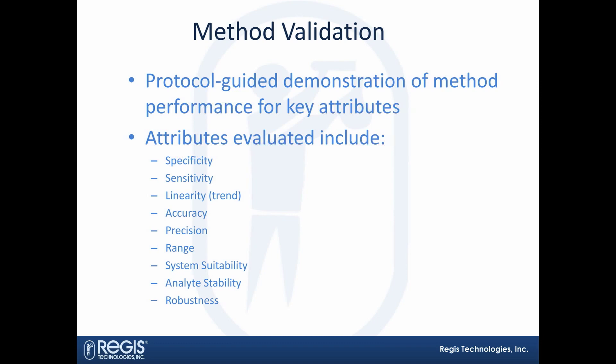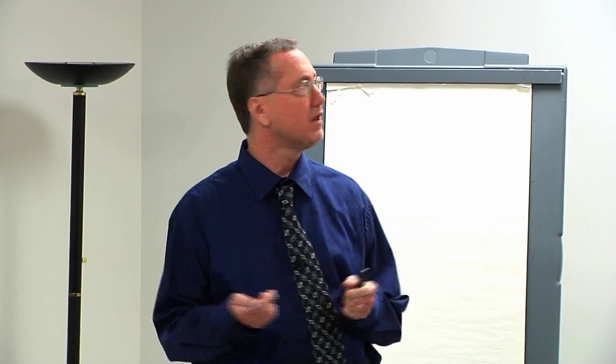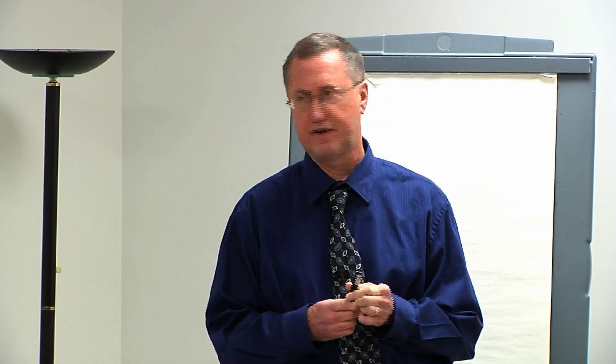Key performance attributes of method validation are: specificity, which means you want to look at the right thing — you may have negative controls such as blanks to show it's discriminatory. Sensitivity is how low you can go in detecting what you need to find. Linearity or trend is the ability to see a relationship between response and concentration. Accuracy is closest to a true value, and can also be seen as recovery from spike samples. Precision is variability.